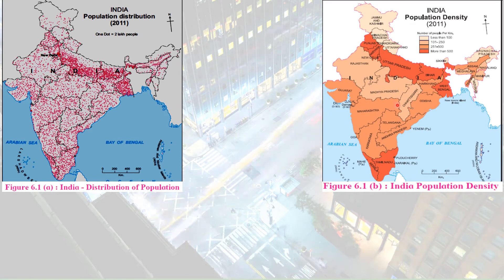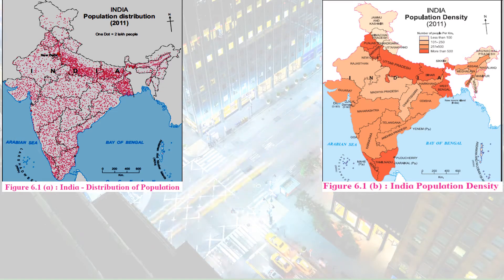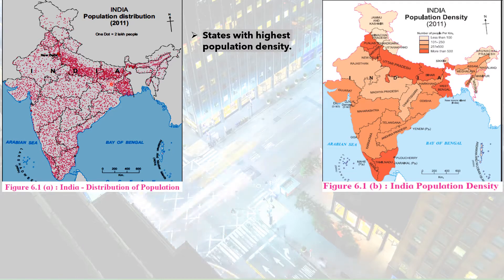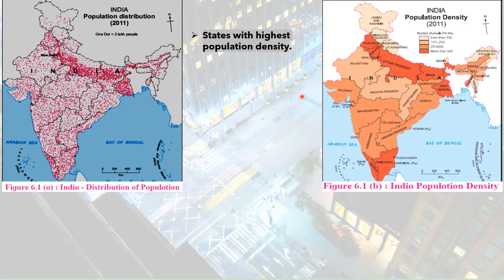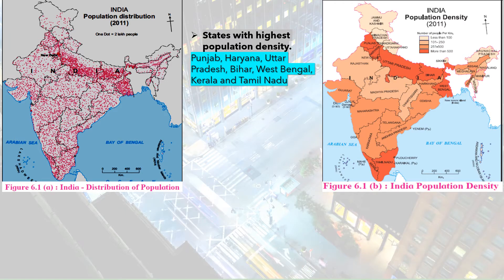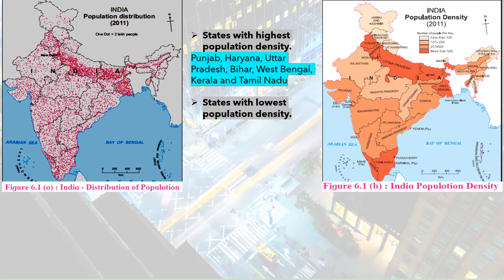Density of population in simple terms means the number of people living in one square kilometer. Now let us answer the questions on page number 38 regarding these two maps. They have asked us to name the states with highest population density. In the dot method map we see the maximum concentration of population is in the North Indian plains and South India. The states with highest density, colored dark brown for more than 500, are Punjab, Haryana, Uttar Pradesh, Bihar, West Bengal, Kerala and Tamil Nadu.